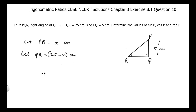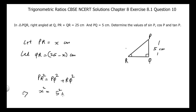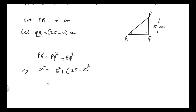By Pythagoras theorem, PR squared equals PQ squared plus RQ squared. Since PR is X, PQ is 5, and RQ is (25 minus X), we get: X squared equals 25 plus 625 plus X squared minus 50X, which is the expansion of (25 minus X) squared.